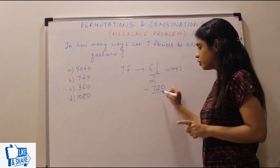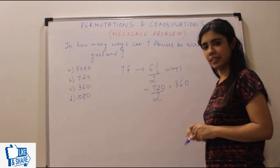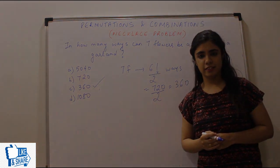Now just be careful. They have marked 720 also in the options. But that is not your answer. Because you have to divide it by two. So your value becomes 360. So 360 is your right answer.